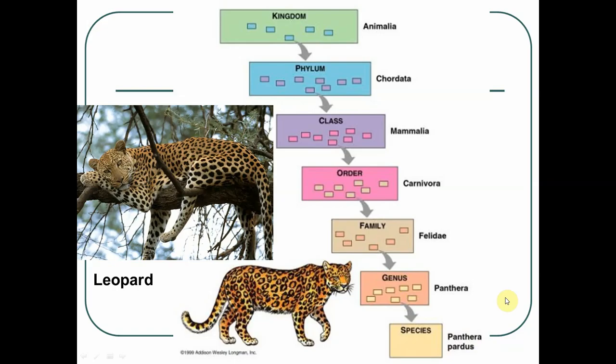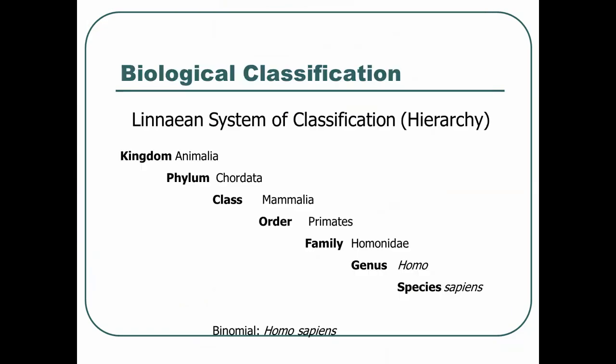Let's classify modern humans. Notice we share the first three levels with a leopard — we're also in kingdom Animalia, we're also a chordate with a backbone, and we're a mammal. We're in the primates order, the hominid family, our genus is Homo, and our species is sapiens. So we say we're Homo sapiens — Homo the genus, sapiens the species.